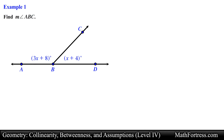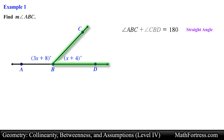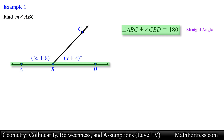We first need to set up a geometric relation that will allow us to solve for the variable x. Notice that points A, B, and D are collinear. This means that they lie in the same line, which also means that this line represents a straight angle. Recall that straight angles measure 180 degrees. This straight angle is formed by two angles: angle ABC and angle CBD. So the sum of the measures of angle ABC plus angle CBD must equal 180 degrees since both angles form a straight angle.